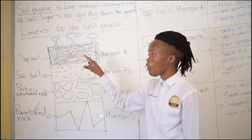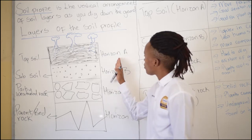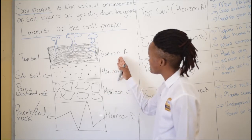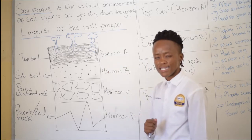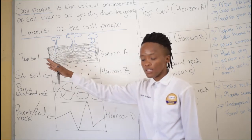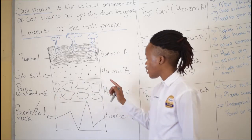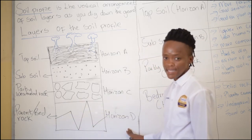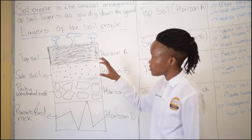Topsoil can also be called Horizon A. Students often get exam questions asking about the characteristics of Horizon A, and they usually mix up the horizon name and the layer name. My advice is: listen to what the question is saying. If it says horizon, state the horizon. If it says the layer, state the topsoil. Subsoil is also called Horizon B, partly weathered rock is Horizon C, and bedrock or parent rock is also called Horizon D. In our next session we'll be doing the characteristics of these layers.